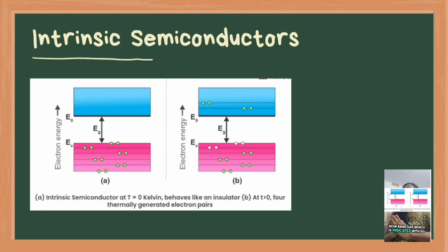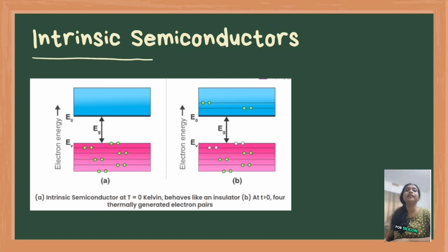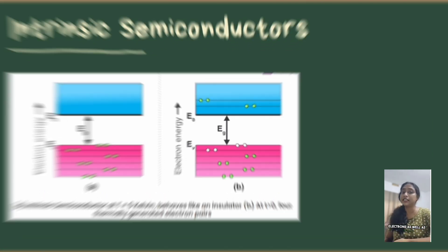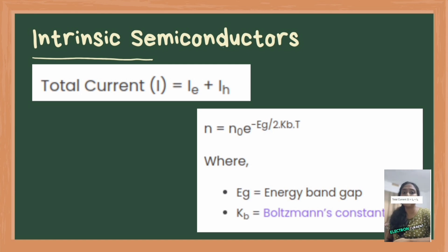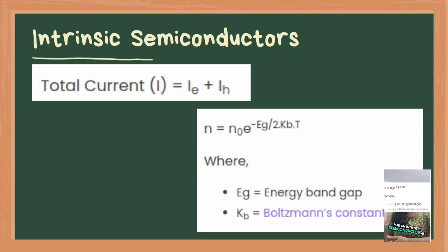The band gap, indicated as EG, is the energy difference between the valence band and the conduction band. For silicon, EG is about 1.1 electron volt; for germanium, it is 0.66 electron volt. In intrinsic semiconductors, current flows due to the motion of free electrons as well as holes. The total current is the sum of the electron current IE due to thermally generated electrons and the hole current IH. At finite temperature, the probability of electrons existing in the conduction band decreases exponentially with an increasing band gap.